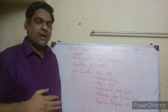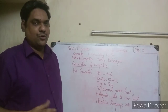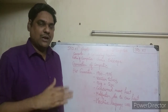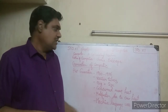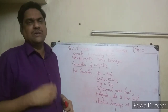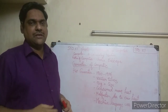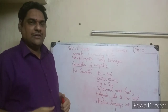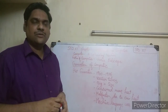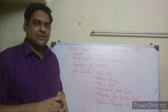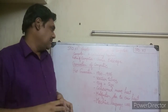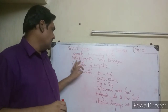At first, computers were used only for number calculations, but later they developed further. Now computers are used for many things - sending messages, creating documents and files, online banking, online shopping, and much more. But at the starting level, the computer was basically a calculating machine used for number processing.